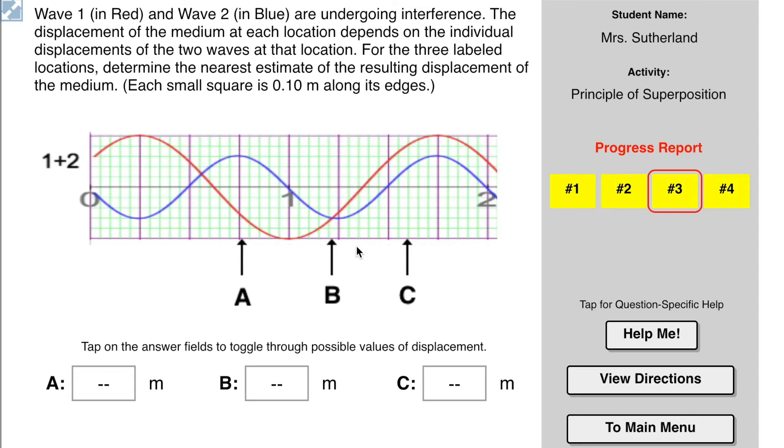So wave one in red and wave two in blue are undergoing interference. The displacement of the medium at each location depends on the individual displacements of the two waves at that location. For the three labeled locations, determine the nearest estimate of the resulting displacement of the medium. Each small square is 0.1 meters along its edge.